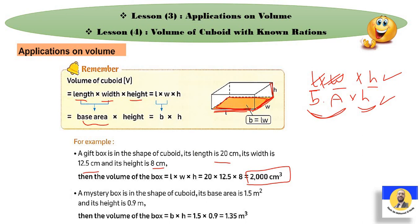A mystery box is in the shape of a cuboid. Its base area is 1.5 m². And its height is 0.9 m. So how can we find the volume? Volume equals base area times height: 1.5 times 0.9. When we do the multiplication, the answer will be 1.35 m³.